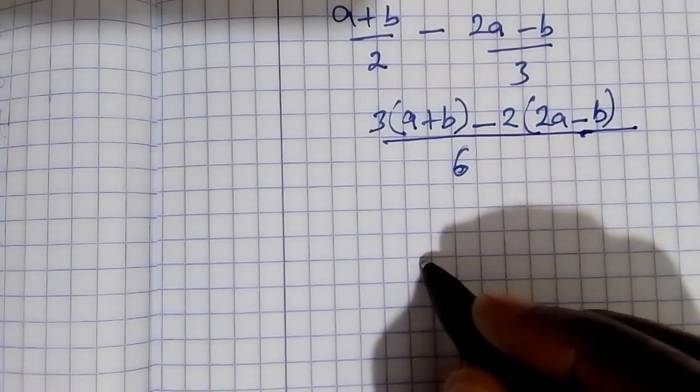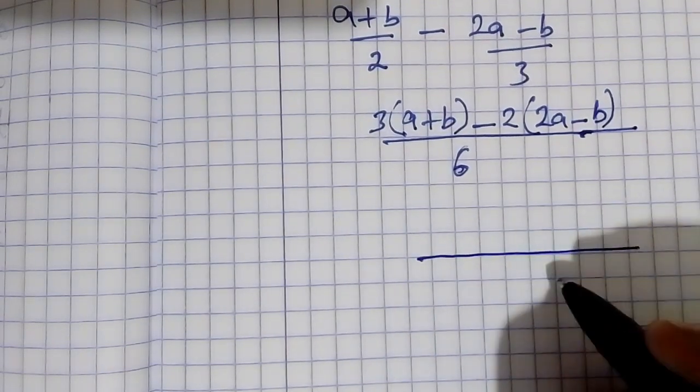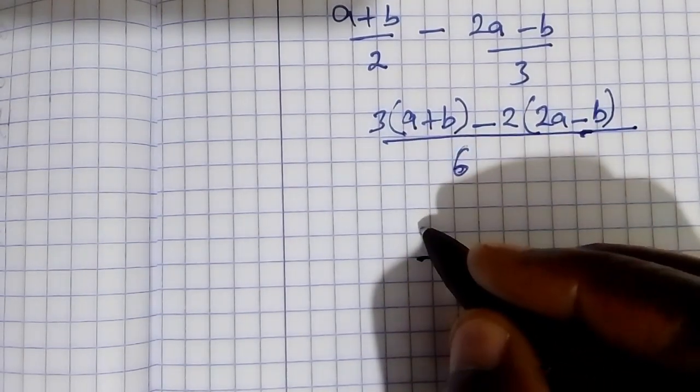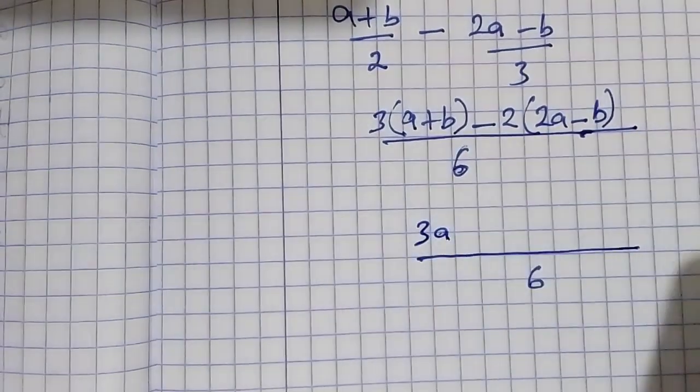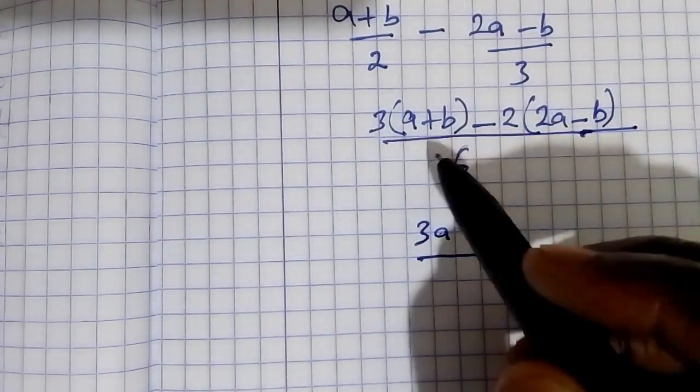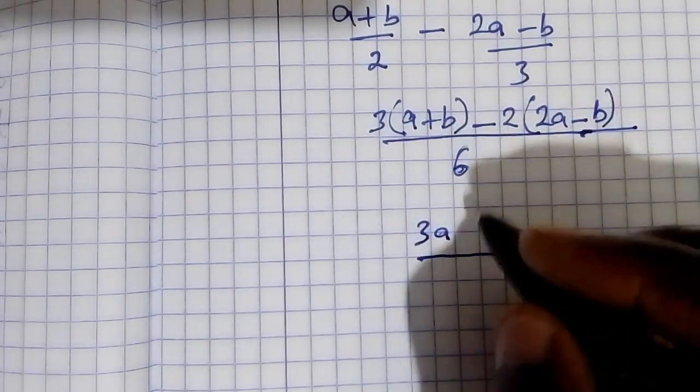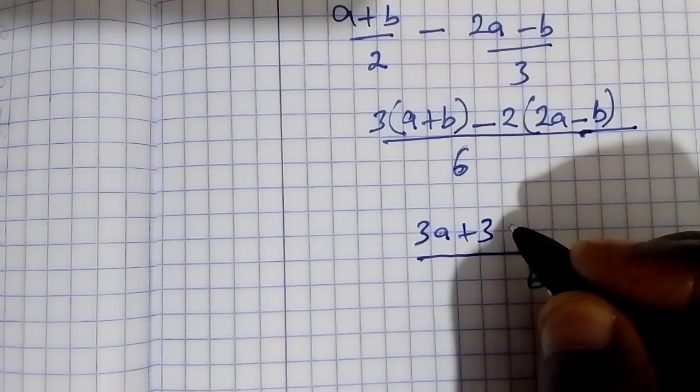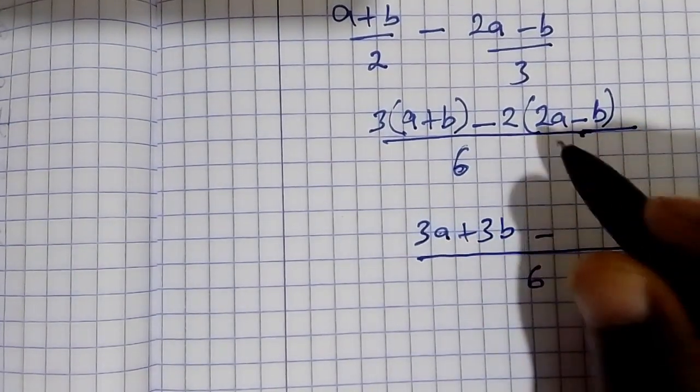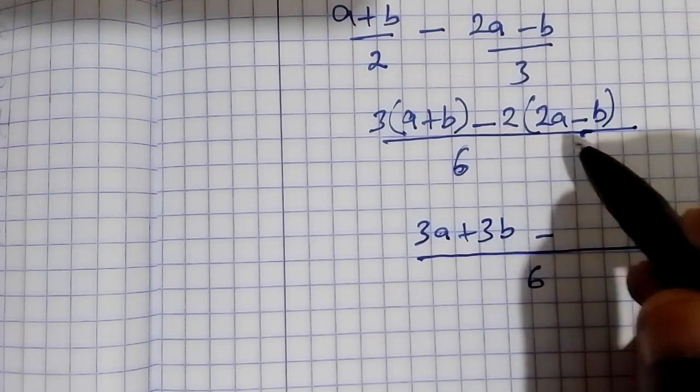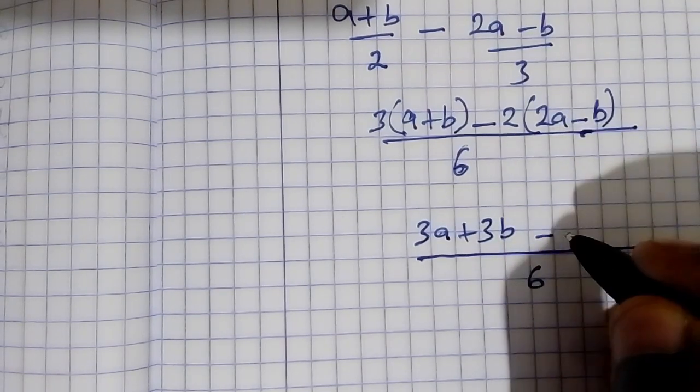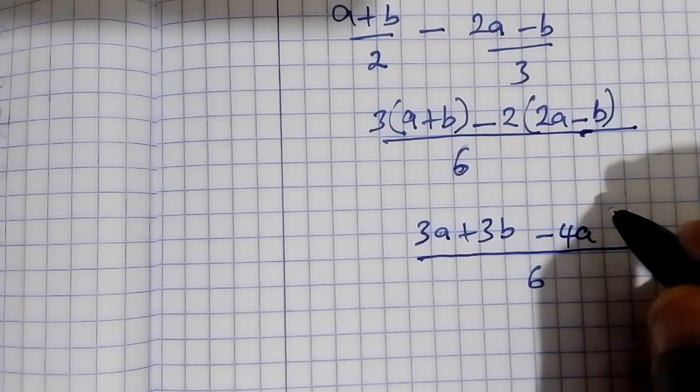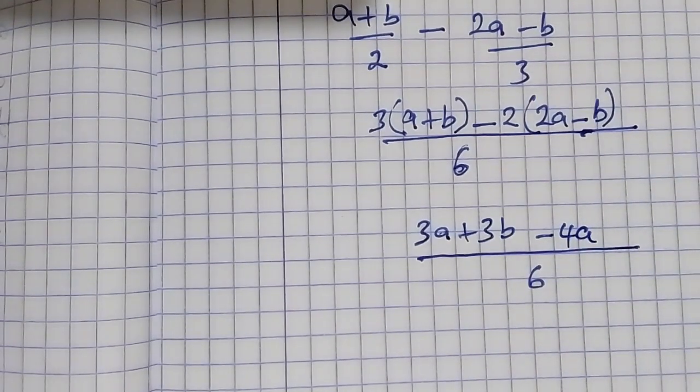So our denominator is still 6. So now 3 times a is 3a, 3 times b is 3b. Minus 2 times 2a is minus 4a.